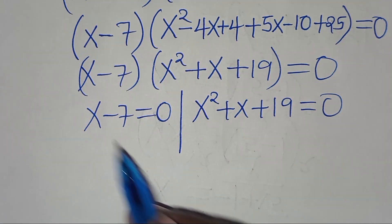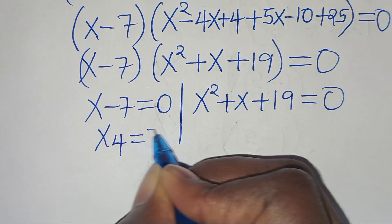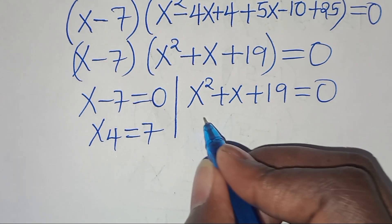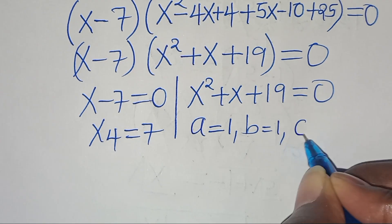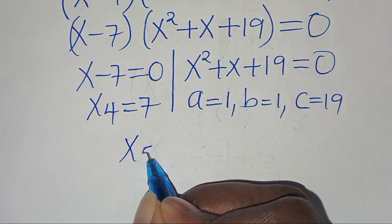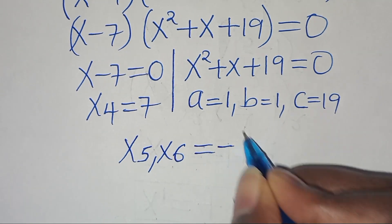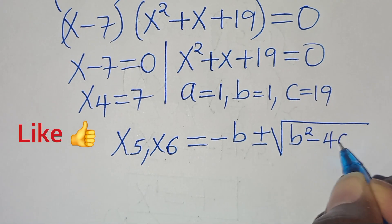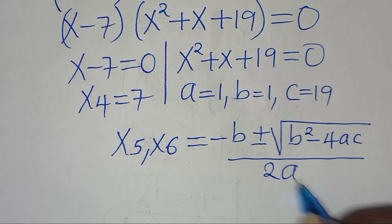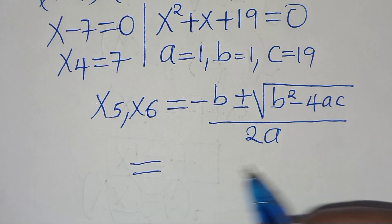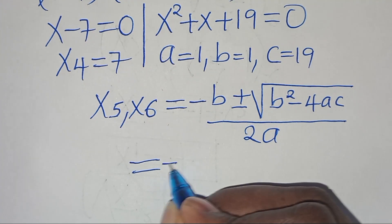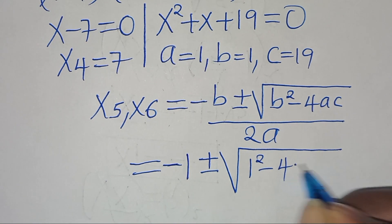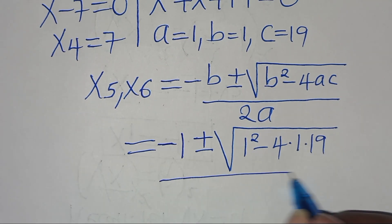From the first factor, x minus 7 equals 0, so x₄ equals 7. For the quadratic x squared plus x plus 19 equals 0, we have a equals 1, b equals 1, and c equals 19. Applying the quadratic formula: x equals minus 1 plus or minus the square root of 1 minus 4 times 1 times 19, all divided by 2. That gives 1 minus 76 equals minus 75.